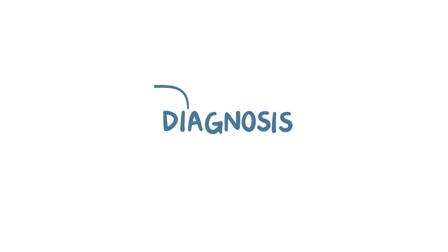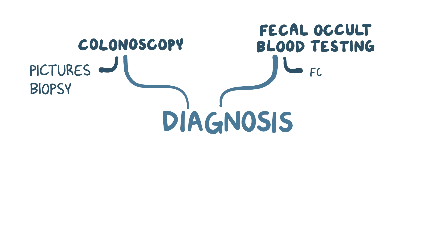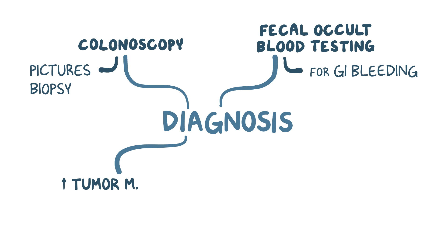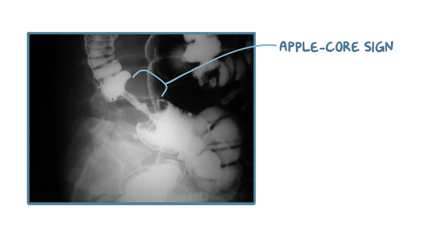Diagnosis of colorectal cancer typically requires colonoscopy, which is when a camera is inserted retrograde into the colon and rectum to take pictures of abnormal-looking polyps and get a biopsy. In addition, fecal occult blood testing is often done to look for evidence of gastrointestinal bleeding. Typically in colorectal cancer, there's an elevation in the tumor marker CEA, which is a glycoprotein involved in cell adhesion, though this is not a very specific finding. A barium enema can be useful as well, where a liquid is injected into the rectum through a small tube and an x-ray is taken to look for abnormalities. On a barium enema, a classic sign of colorectal cancer is the apple core sign, which shows the constriction of the lumen, most often in the descending colon.